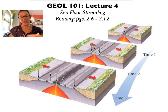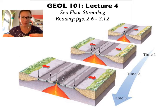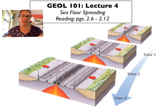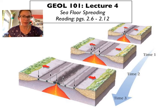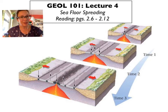Hello everybody, your 101 instructor back again with another short video lecture, this time on seafloor spreading. In the last lecture we discussed the meteorologist Alfred Wegener and his hypothesis of continental drift, and we talked about how geomagnetism allowed us to figure out that the continents had to be moving relative to one another — and so he was fundamentally correct about that. What we still don't really know, however, is what process or mechanism allows the continents to move, and that's where seafloor spreading comes in.